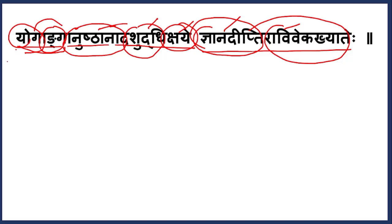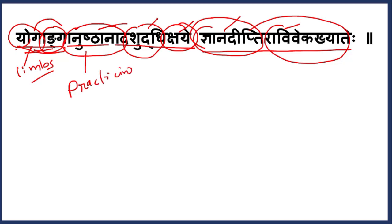What is the sutra telling us? Yoga angas — there will be some angas, meaning limbs of yoga. By practicing these yoga limbs, the Ashuddhi — meaning the impurity — which is present in your mind or chitta, will be removed.